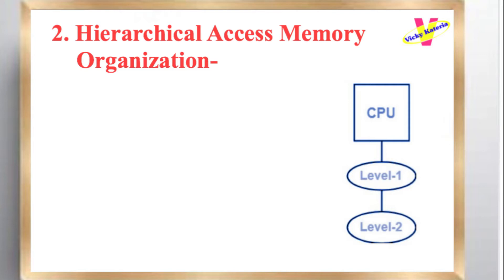Hierarchical Access Memory Organization. In this memory organization, memory levels are organized as: Level 1 is directly connected to the CPU, Level 2 is directly connected to Level 1, Level 3 is directly connected to Level 2, and so on.